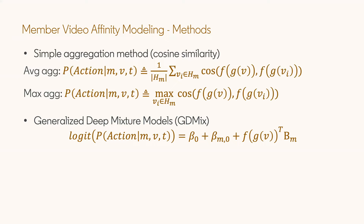The second method is a more sophisticated method. We introduce the GL mix model, or its extension version, the GD mix model. In the GL mix model, which is called a generalized linear mixture model, we characterize the logit of MVA as the summation of a fixed effect term and a random effect term. Here, beta zero and beta M zero stand for the fixed effect — that is, the global preference on watching video and member M's preference on watching video. The second term is the random effect term indicating member M's preference over the test video V, combined using a linear combination.